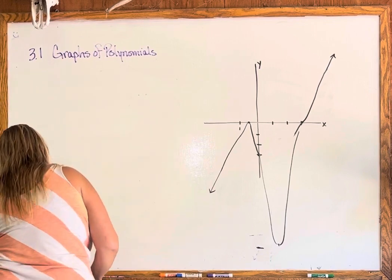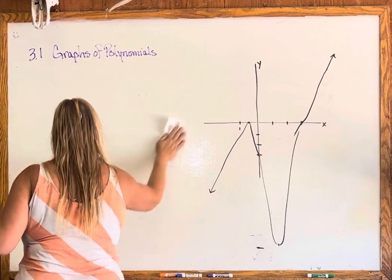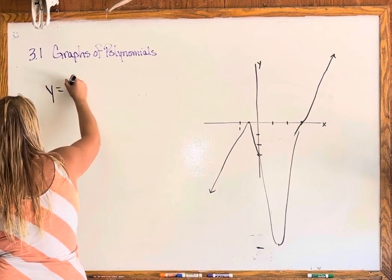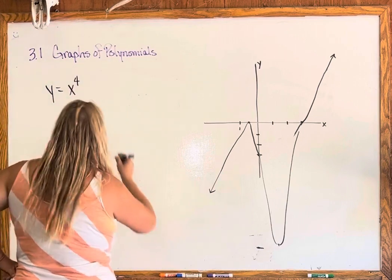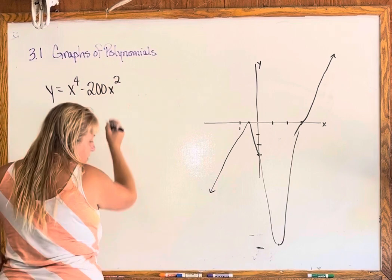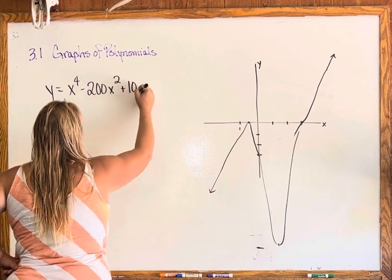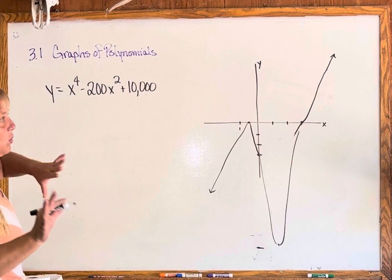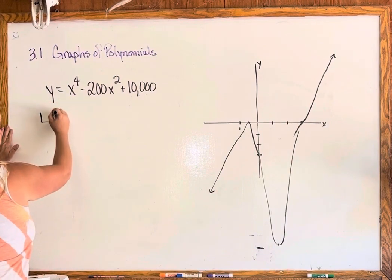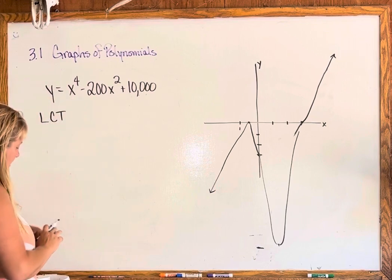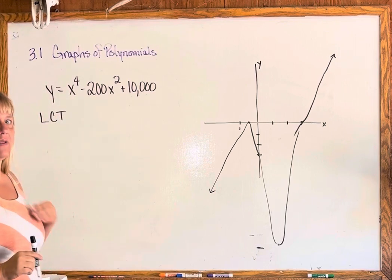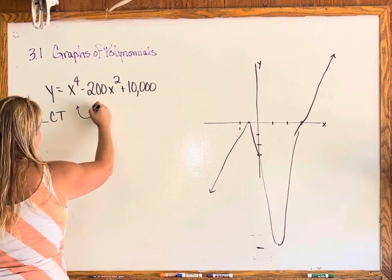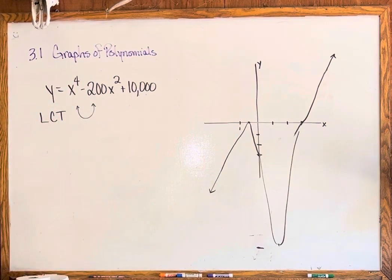The next one is written in regular polynomial form, not factored form. It says y equals x to the fourth minus 200x squared plus 10,000. For the leading coefficient test, because it's x to the fourth it's going to look more like a parabola — and it's a parabola going up, not down. So we draw it with arrows both going up.